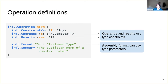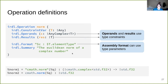We have the same thing in operation definitions: the constraint variable, but also operands and results, and a format and summary for documentation. The format allows us to access nested types — for instance, T is a complex value and elementType is the name of the parameter, so we can easily access it and use this nice formatting, similar to what you have in ODS.